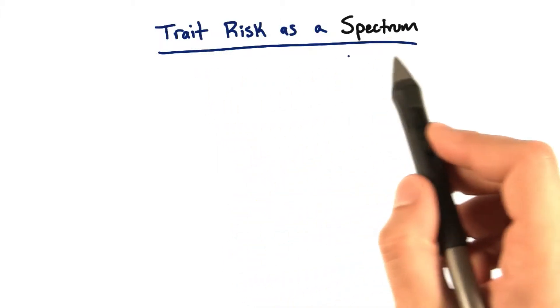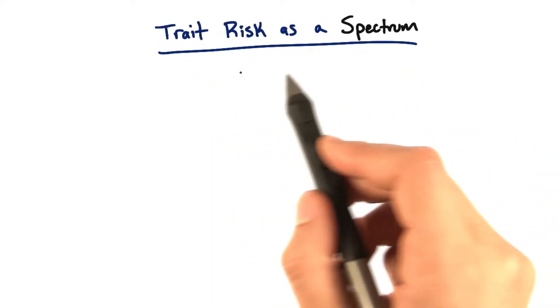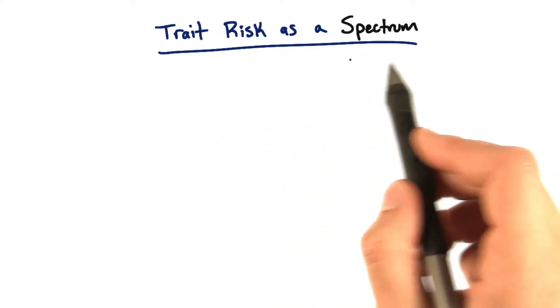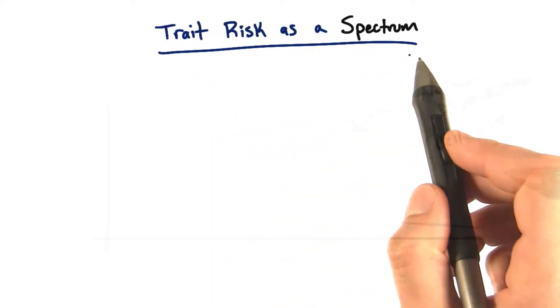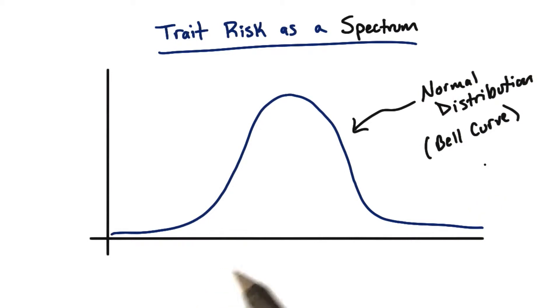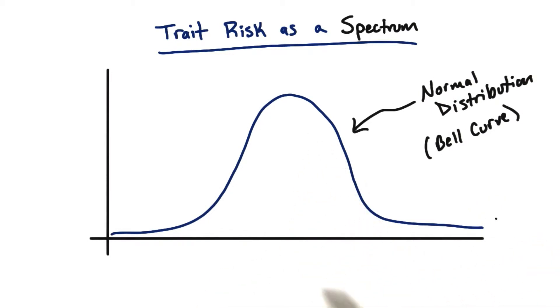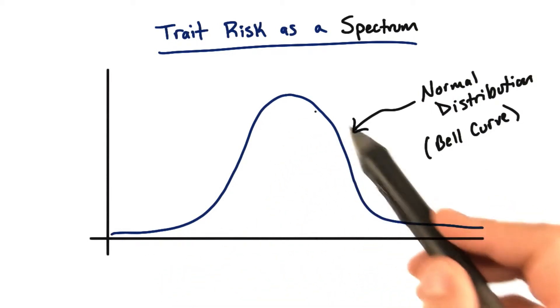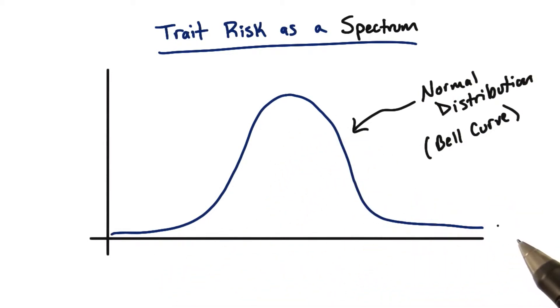Most traits have a distribution in a population, or they exist on a spectrum. This is what we would call a normal distribution or a bell curve. Look at its shape — it looks like a dome-shaped bell.